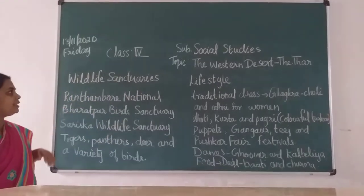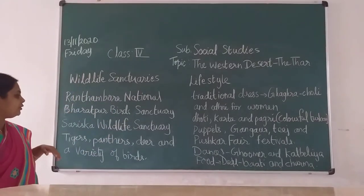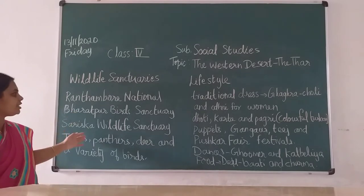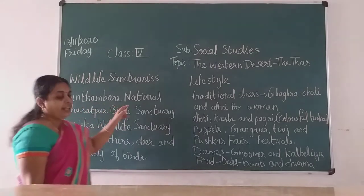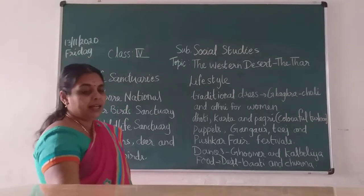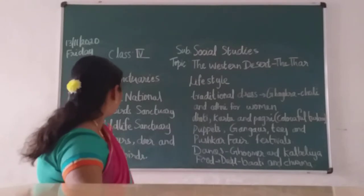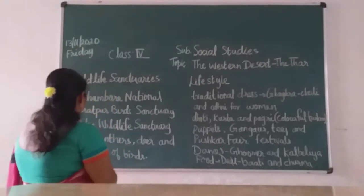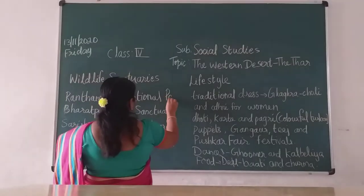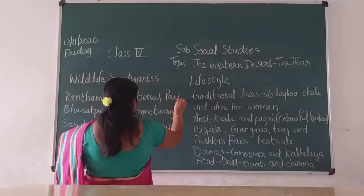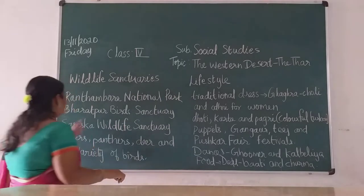In the desert region also you have 3 sanctuaries. Ranthambore national park, which is famous for its tigers.